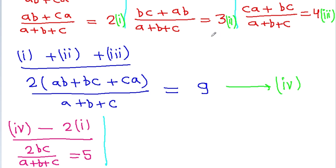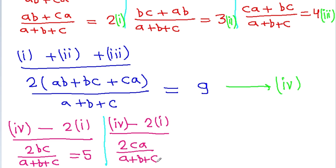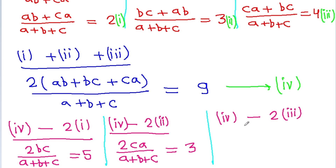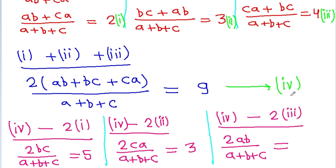If we subtract 2 times equation 2 from equation 4, then 2bc and 2ab cancel, and we get 2 times ca by a plus b plus c is equal to 9 minus 6, which is 3. And if we subtract 2 times equation 3 from equation 4, then 2ca and 2bc cancel, and we get 2 times ab by a plus b plus c is equal to 9 minus 8, which is 1.